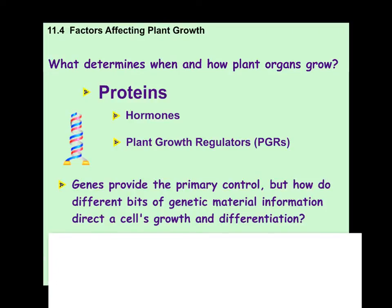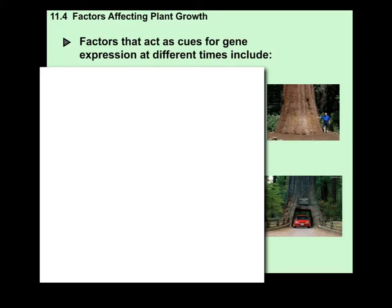We all know that genes, which are segments of DNA, will provide the primary control of how these plants are going to grow — because that's how it works with animals. We're going to read those genes and express them to make things. But how do different bits of genetic information direct a cell's growth and differentiation? Gene expression is when the DNA is read and codes for a certain protein. Proteins make you, so we're going to read the DNA and make you.